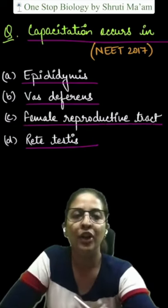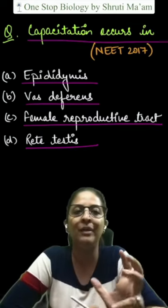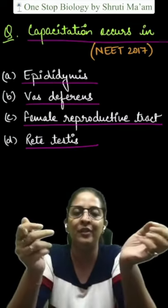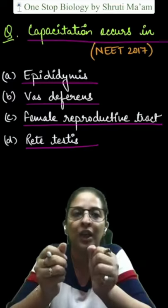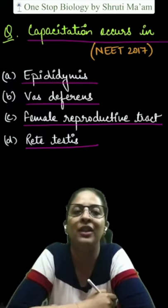Now, what is capacitation? The phenomenon of sperm activation by which sperm develops the ability to fertilize ova in mammals is known as capacitation.